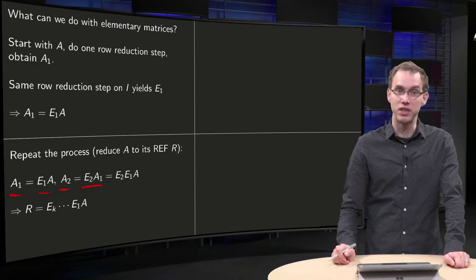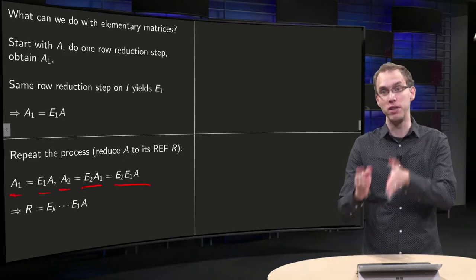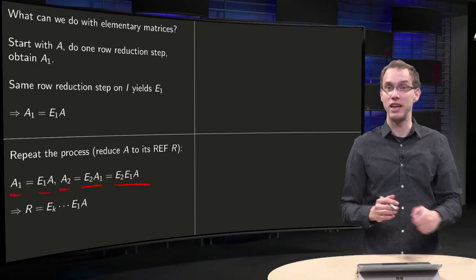However A1 was E1 times A, so we see A2 equals E2 times E1 times A. Now we just repeat this procedure until A is in reduced echelon form.